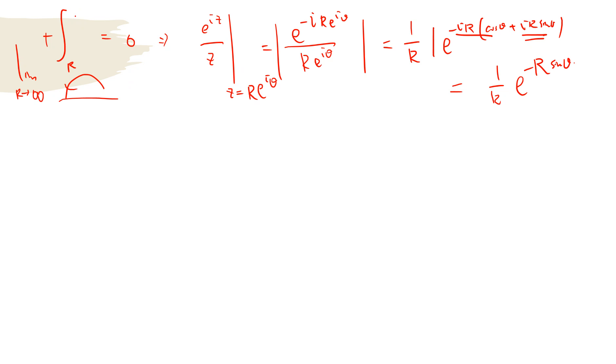So this integral is just exponential i z divided by z dz. It's just less than exponential minus r sine theta, and dz is r i exponential i theta d theta. If you take absolute value, then this goes to 0 as R goes to infinity.